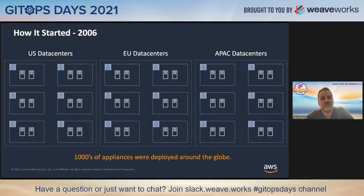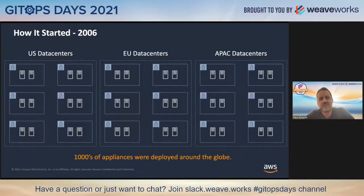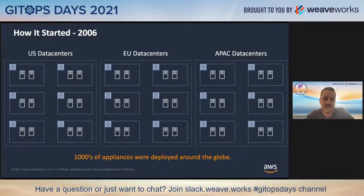Not only was it difficult to manage across all these different locations — and again, this is back in 2006, so it wasn't AWS multi-region, multi-AZ; this was using Equinix facilities or our own facilities, very manual — but Sun didn't only use one operating system. We used both Linux and Solaris, and we were multi-architecture, with SPARC and x86. So the task was: manage all these facilities, all these appliances worldwide, two operating systems, and two different architectures.